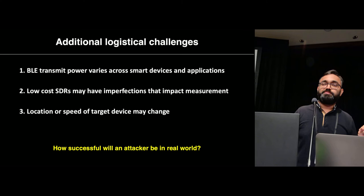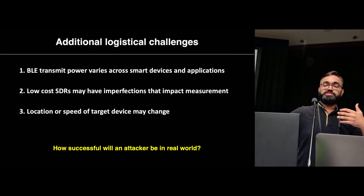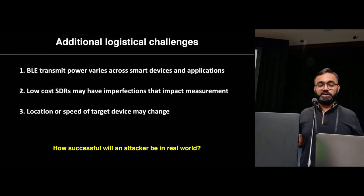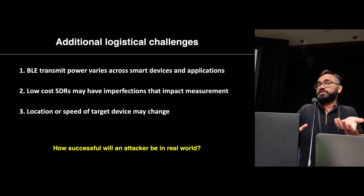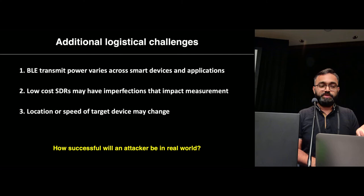There are additional logistical challenges in terms of how the attacker places the SDR. For instance, some smartphones have much higher transmit power than others, meaning the effective range is different — which affects where to place the SDR. Low-cost SDRs, if used instead of a $2,000 USRP, may also have their own imperfections affecting measurements. Also, a moving target could introduce Doppler effects, though the last two challenges did not seem to have much of an impact, as discussed more in the paper.